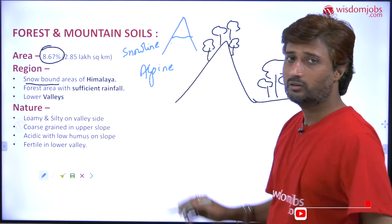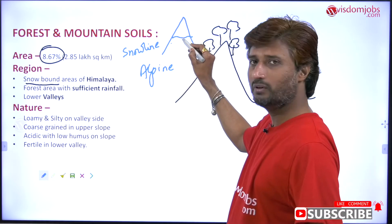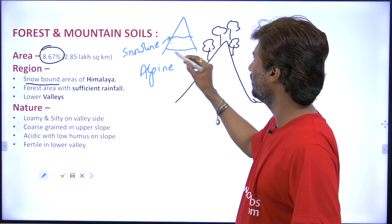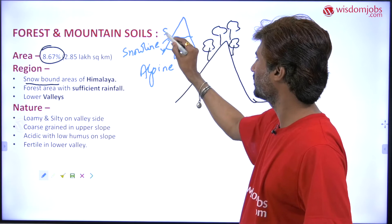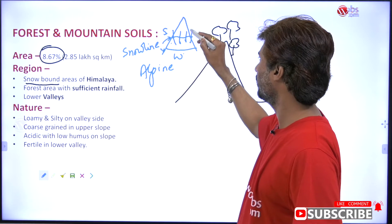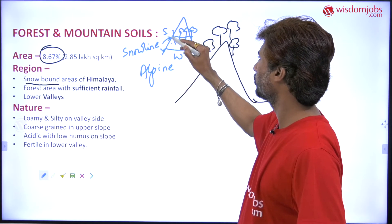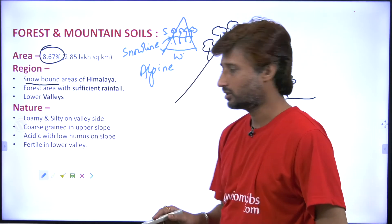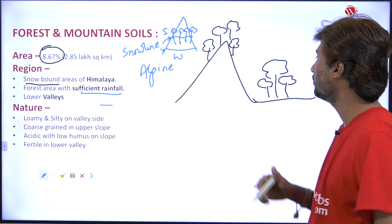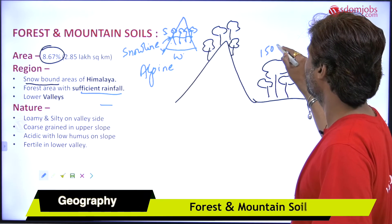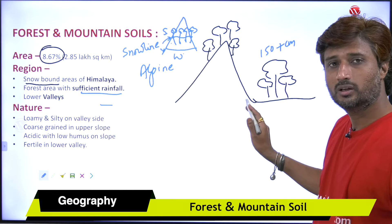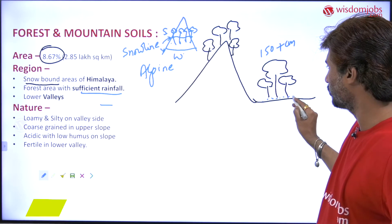That region which has snow will vary by season. This is the snow line in summer and this is the snow line in winter. You will find this soil in that area. The forest growing in this part will have that type of soil. Secondly, forests with sufficient rainfall — sufficient meaning above 150 centimeters — will also have this kind of soil.